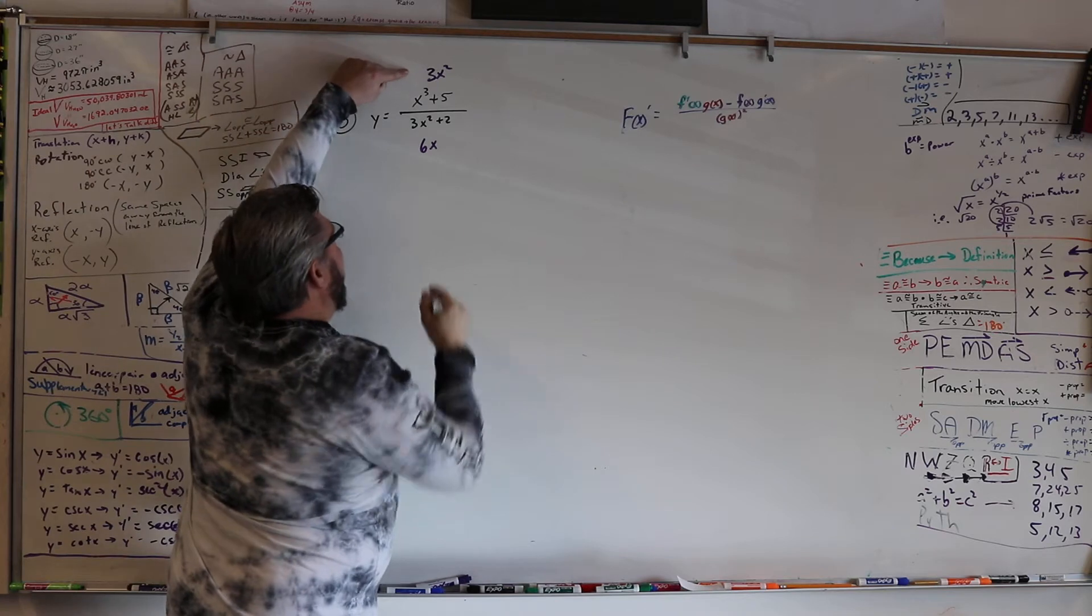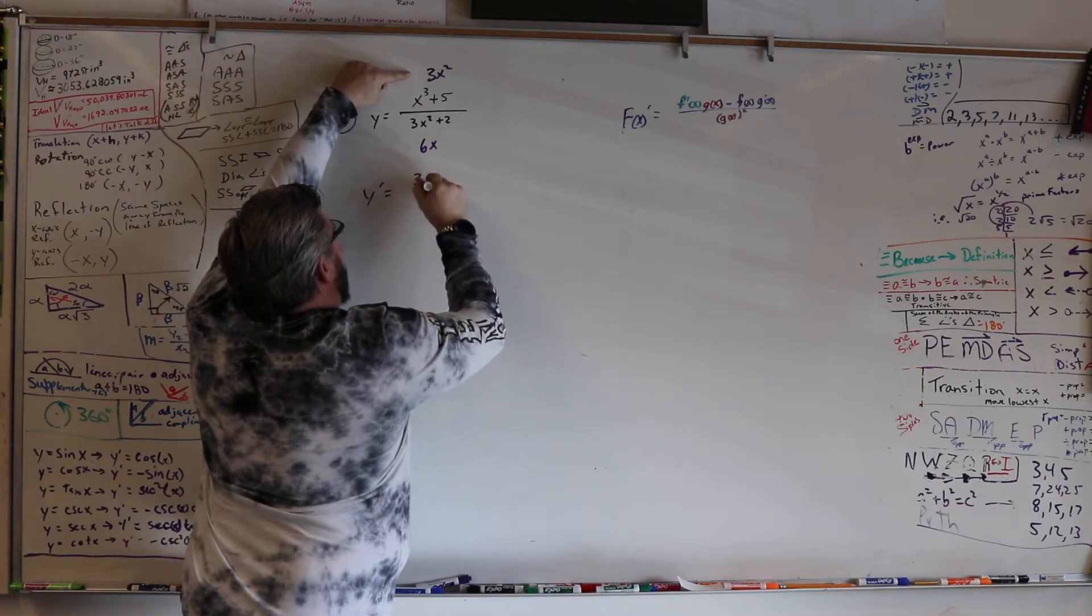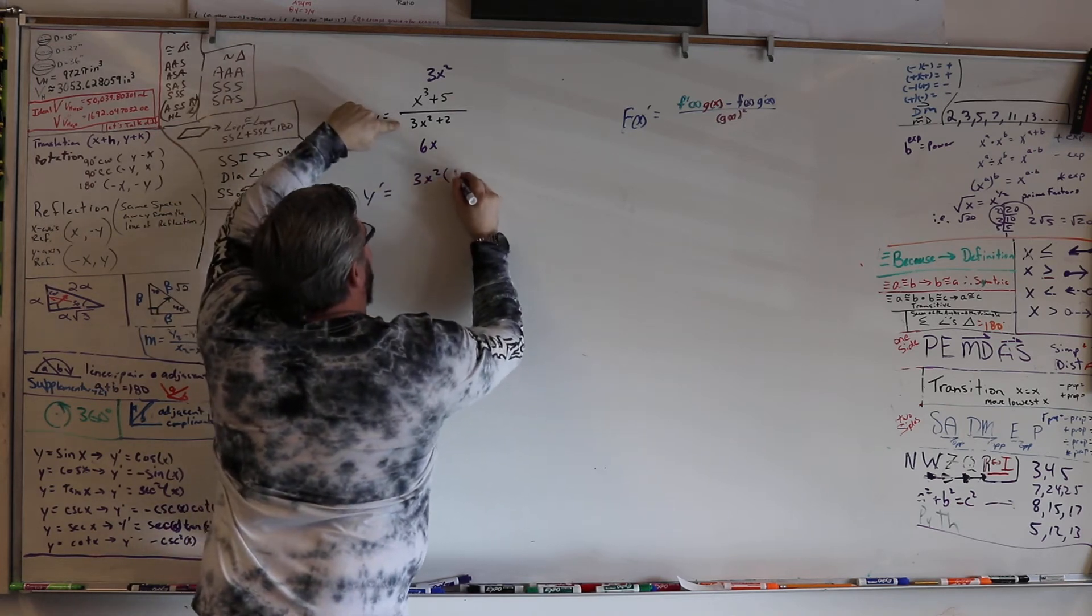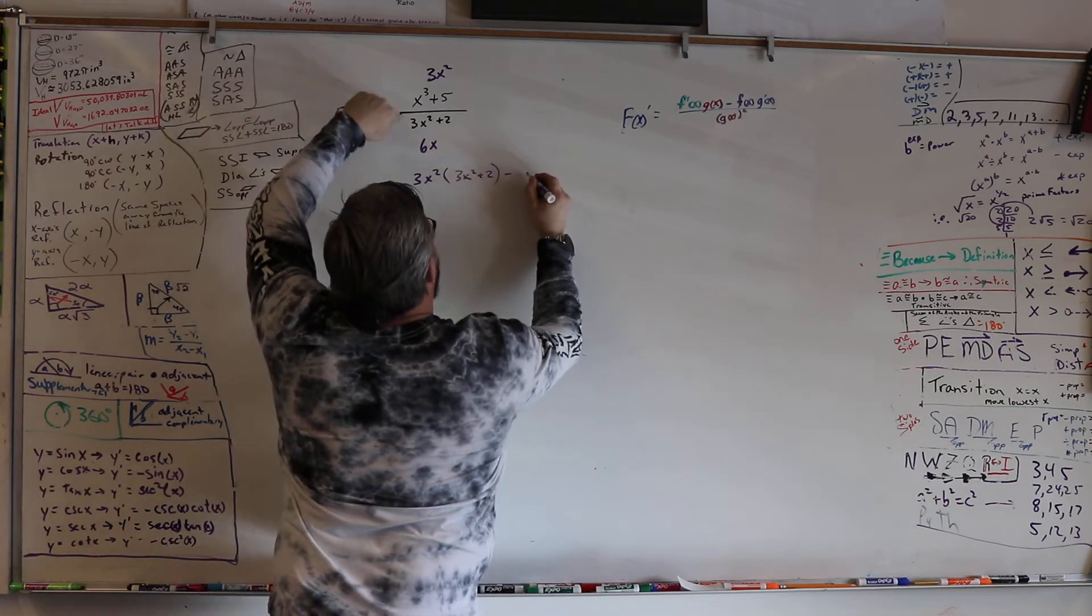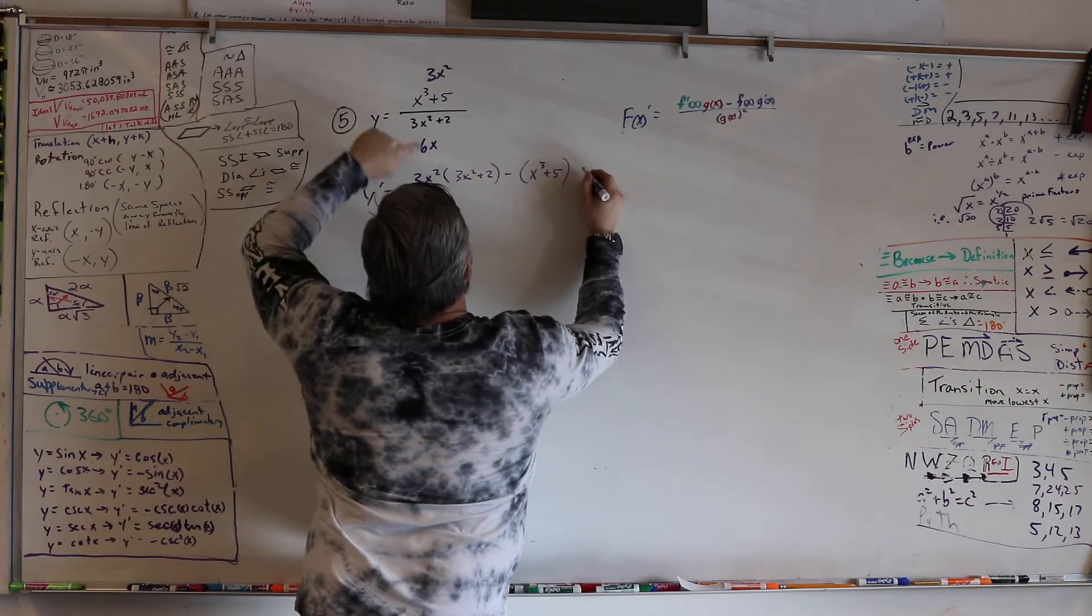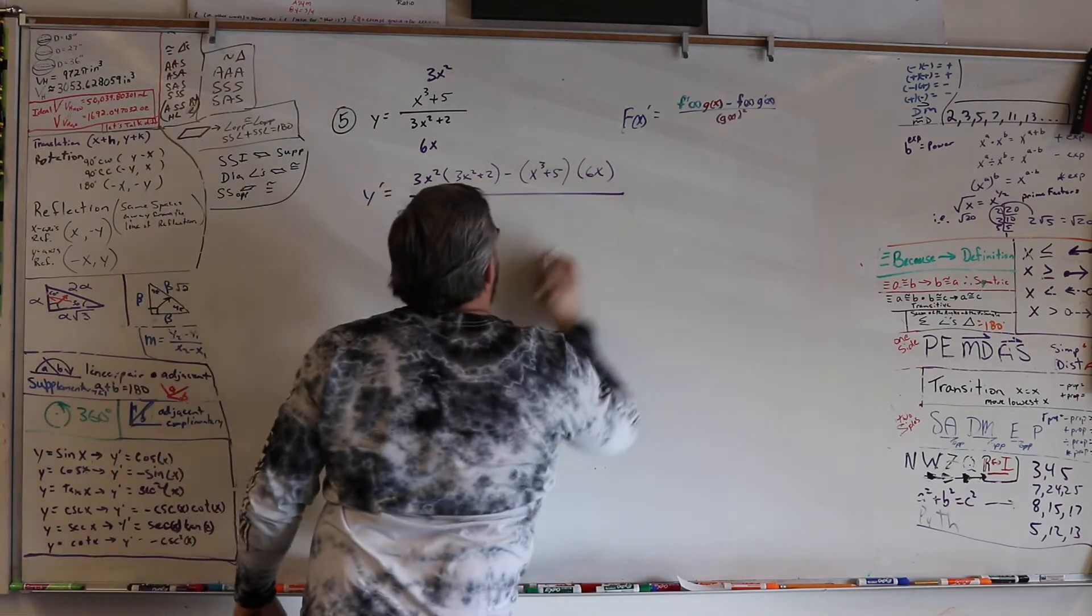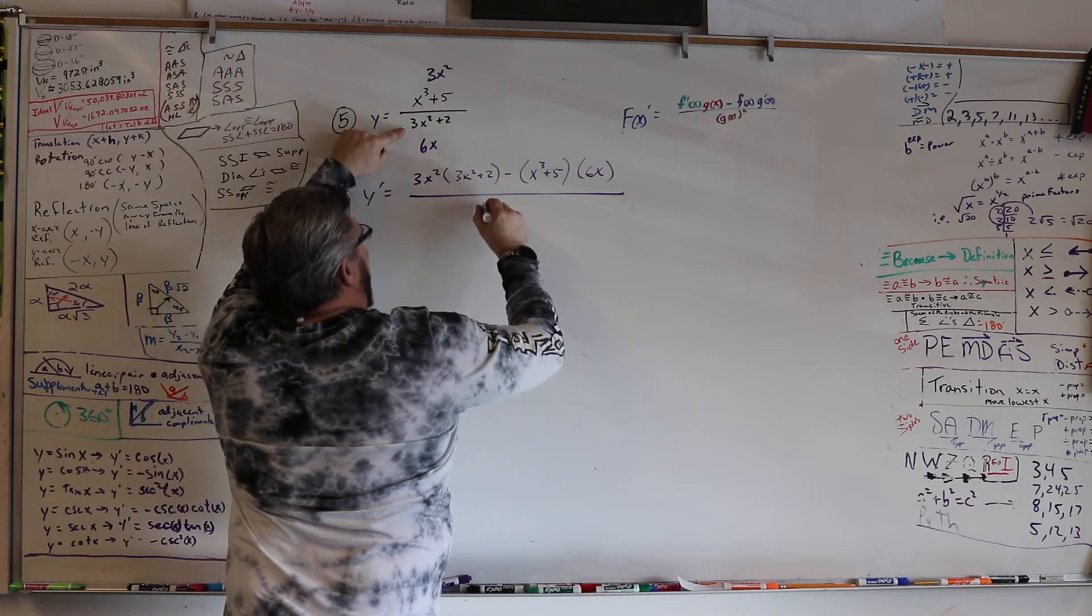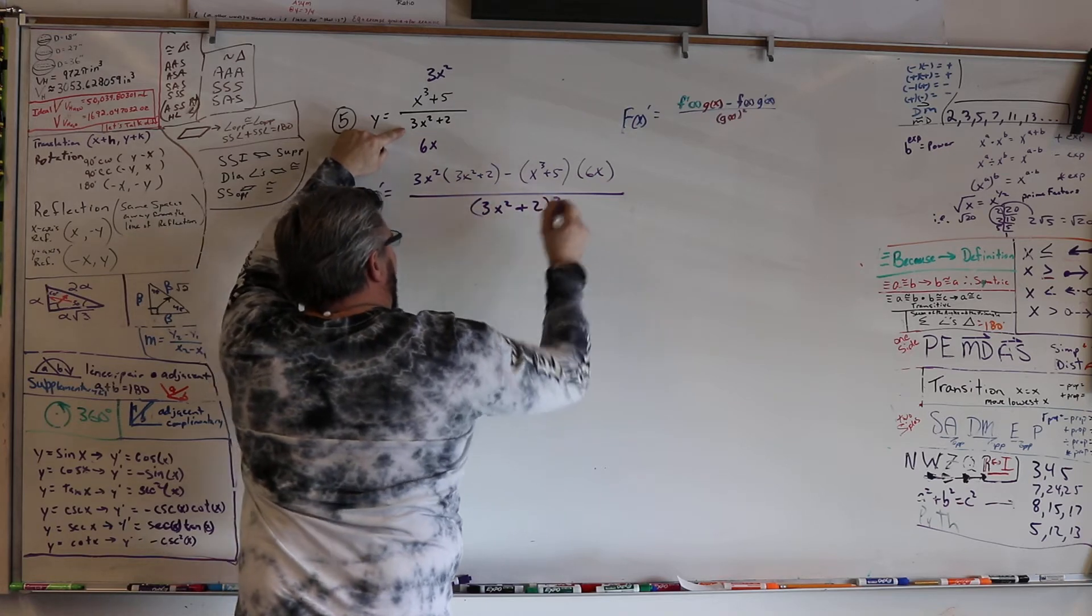So y prime is equal to f prime of x, that's 3x squared, times g, which is 3x squared plus 2, minus f of x, x cubed plus 5, times g prime, which is 6x. All over g squared, so that's 3x squared plus 2 squared.